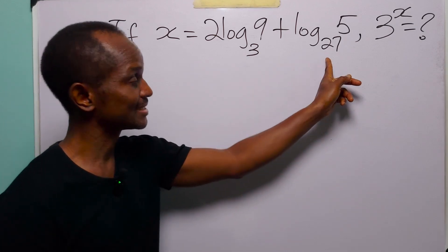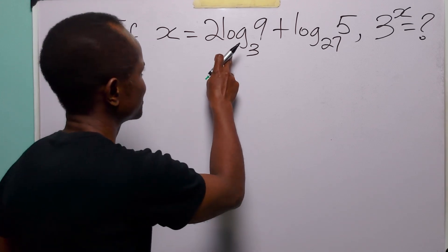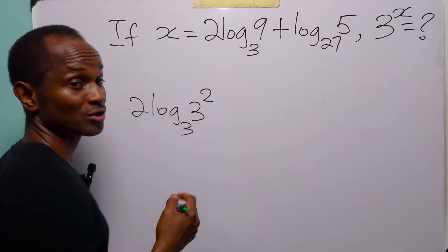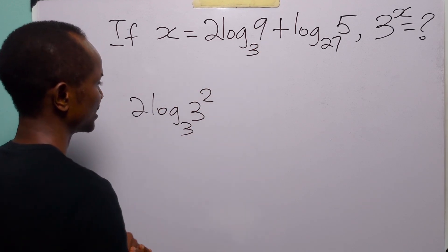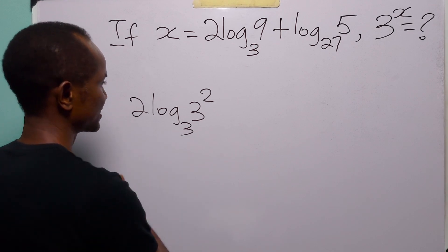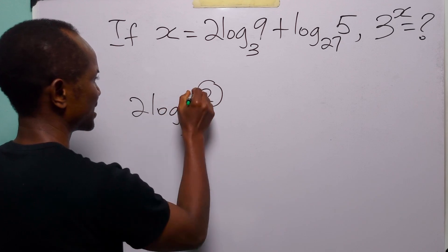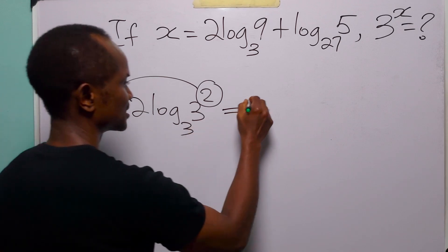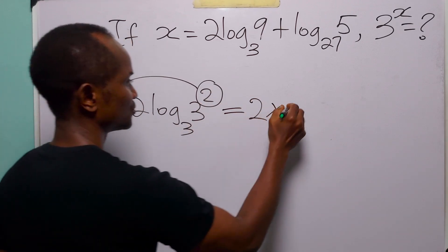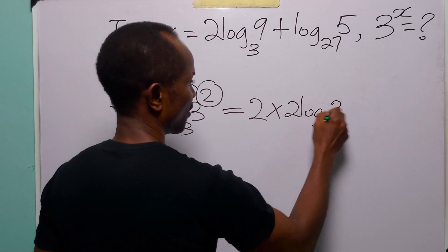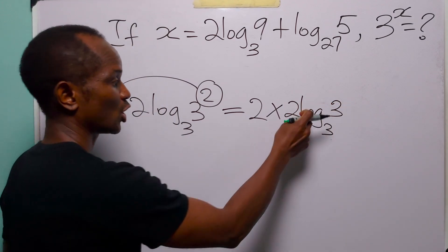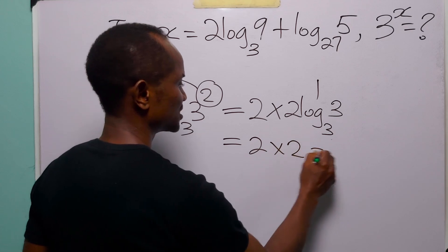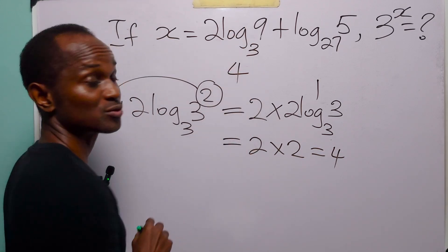To solve this problem, let us start by simplifying this expression. In the first term we have 2 times log to base 3 of 3 squared, because 3 squared equals 9. We apply the power rule of logarithms and bring down the exponent 2 to the front, giving us 2 times 2 times log to base 3 of 3. Since log to base 3 of 3 equals 1, this becomes 2 times 2, which equals 4.